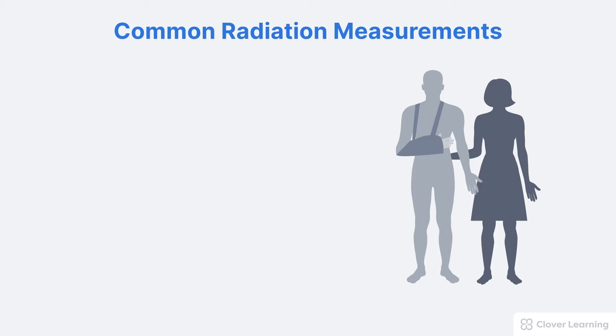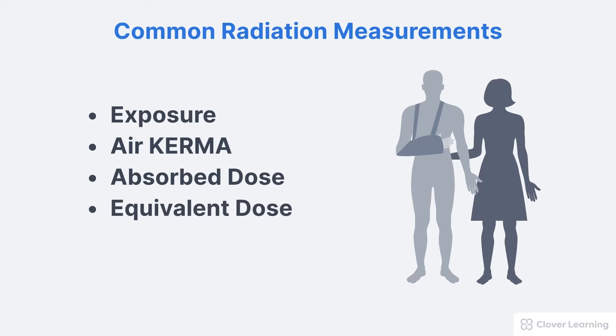Each of these measurements can be quantified in different ways. Some of the most common measurements include exposure, air kerma, absorbed dose, equivalent dose, and effective dose. These measurements are closely related to each other, but they are not the same.